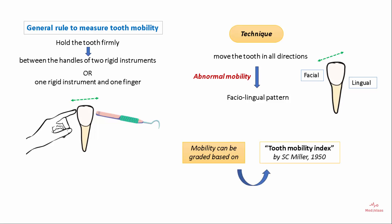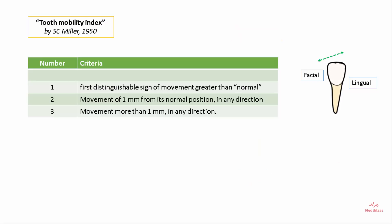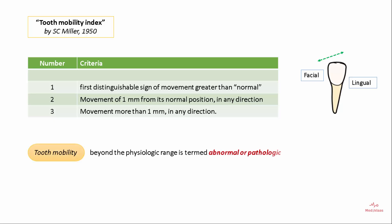Mobility can be graded based on the tooth mobility index given by S.C. Miller in 1950. Grade 1 refers to the first distinguishable sign of tooth movement greater than normal. Grade 2 refers to movement of 1 mm from its normal position in any direction. Grade 3 refers to movement of more than 1 mm in any direction. Tooth mobility beyond the physiologic range is termed abnormal or pathologic.